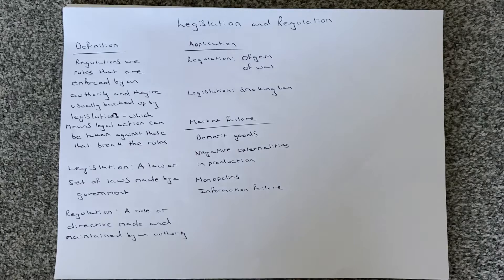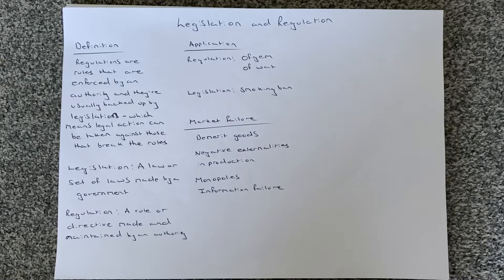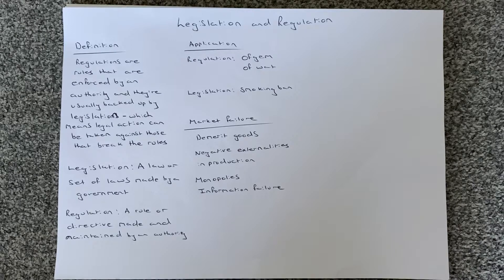So what market failures do legislation and regulation actually come to address? Well, they can address demerit goods — when we think about demerit goods, we're thinking about negative externalities in consumption. Thinking about the smoking ban, that ban on smoking within public places prevents secondhand smoking, and therefore other people do not suffer the negative impacts of one person's smoking. Also, it can be used for negative externalities in production — for example, a particular limit on the amount of pollution, so a regulatory body could make sure that firms aren't polluting over a certain amount.